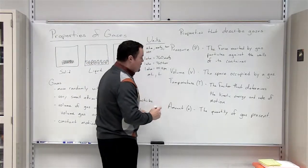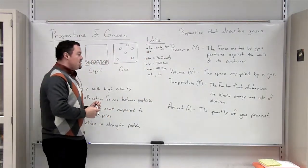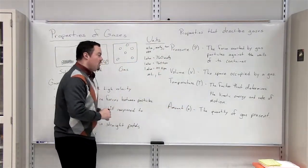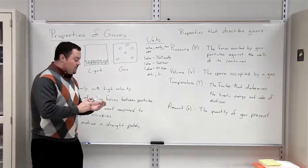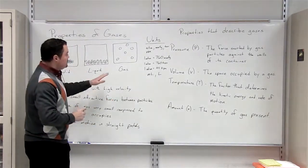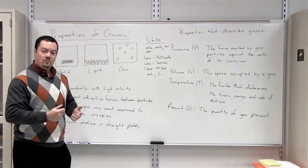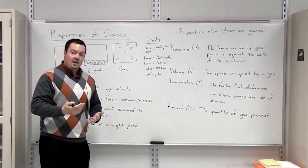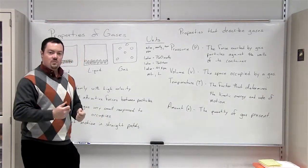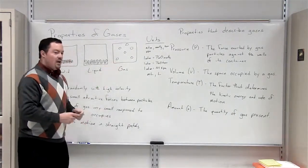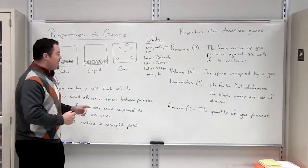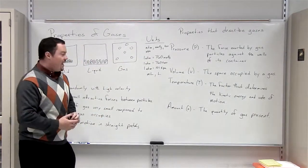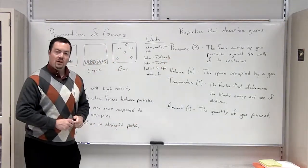The third property that we use to describe gases is temperature. Temperature is the factor that determines the kinetic energy and rate of motion of gas particles, so the temperature of the gas is relative to the speed or velocity of these gas particles. As we raise the temperature of a gas, we are increasing the velocity of the gas particles, and if we increase that velocity we would expect them to hit the surface of their container with more force, and in turn pressure would increase.